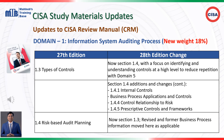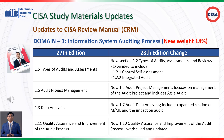This updated section now includes additional business process information, ensuring that audit planning is more integrated and aligned with the organization's strategic and operational goals. The types of audits and assessment section, previously 1.5, is now Section 1.2, with new topics like control self-assessment (1.2.1) and integrated audit (1.2.2), reflecting current practices.